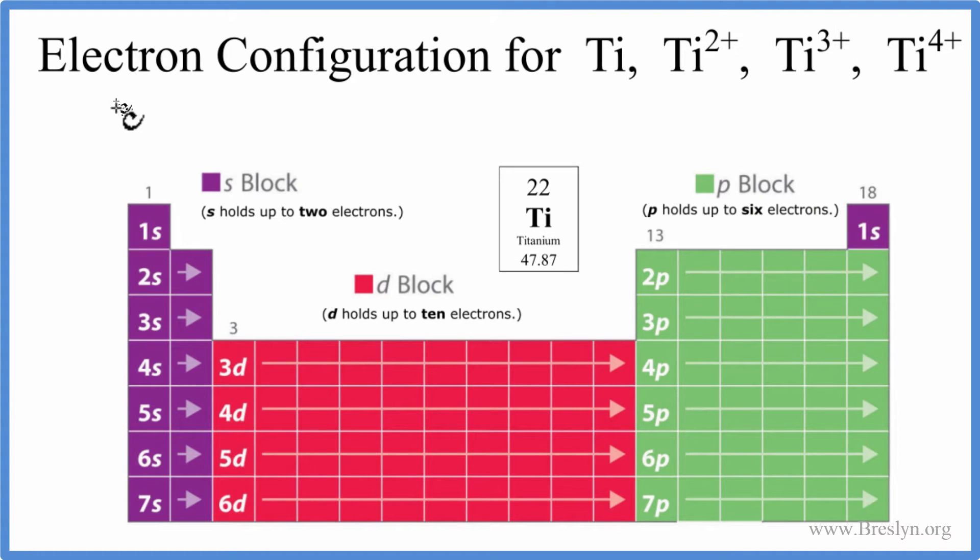So we start with 1s, and s orbitals can hold up to 2. We have 1s1, 1s2. So we've used 2 electrons. Then we go to the 2s, 2s1, 2s2, over to the 2p orbital. And the p orbital can hold up to 6 electrons. So we'll put 6 in there. We've used 10 electrons. We have a total of 22. So 2p, 3s2, 3p6.